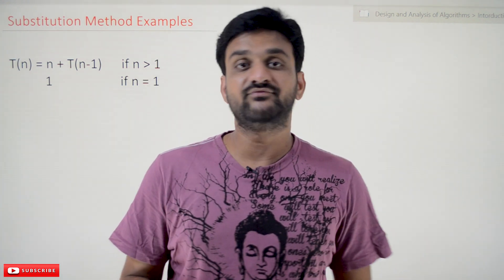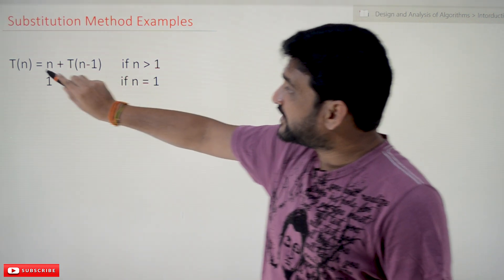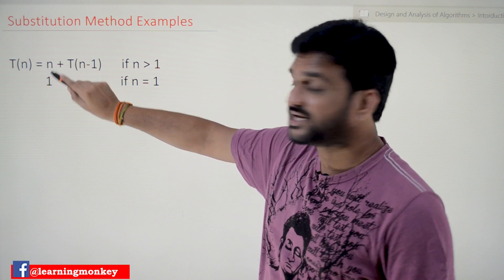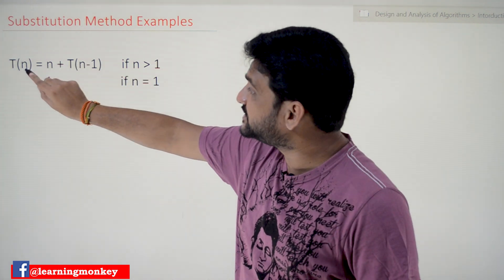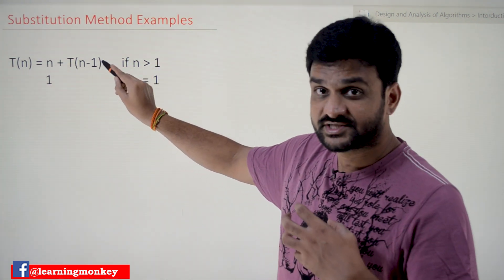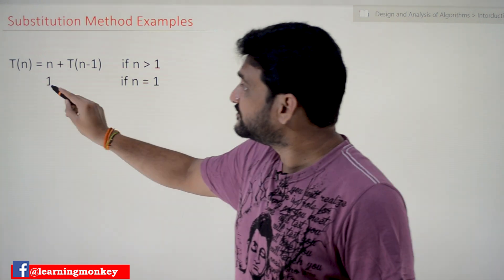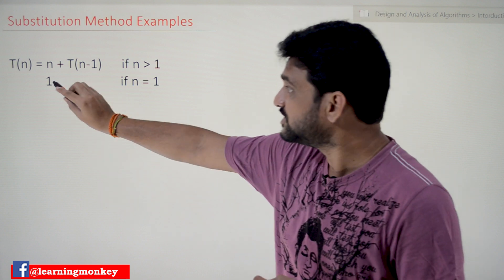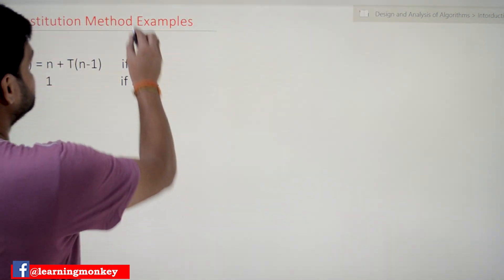Now let's try to solve this equation. When the value is n, the time taken by the algorithm is n plus T(n-1). When the value of n is greater than 1, this is the amount of time taken by the algorithm. If the value of n is equal to 1, it is going to take one unit of time and return the value 1. This is what this recurrence equation states.